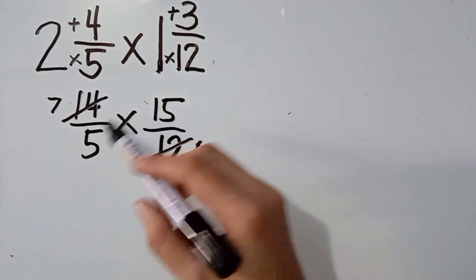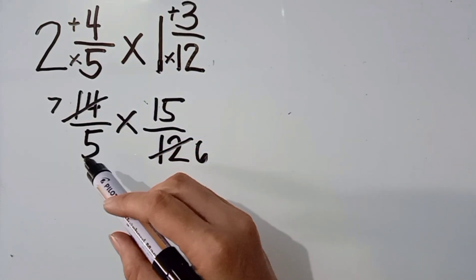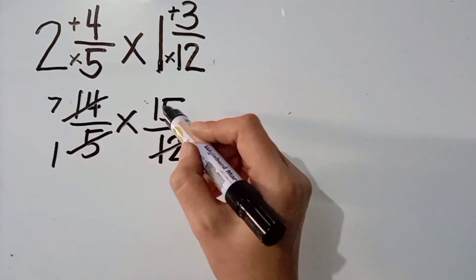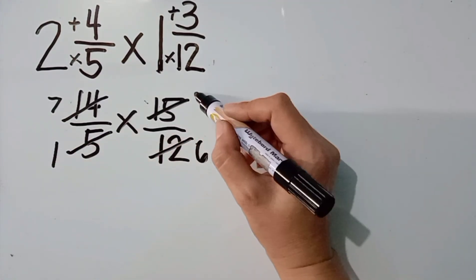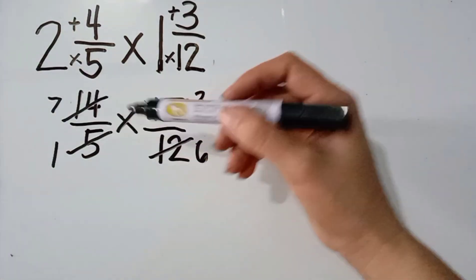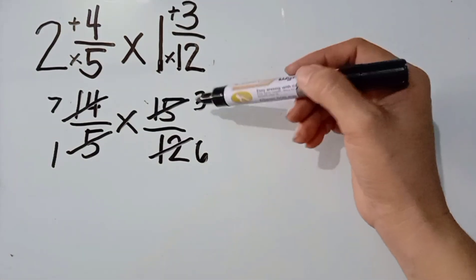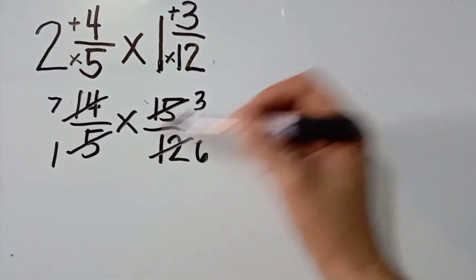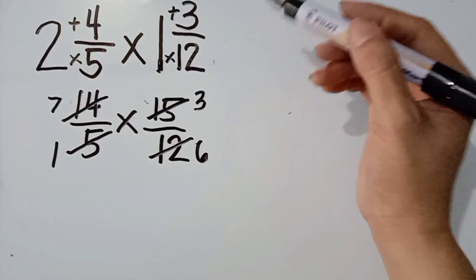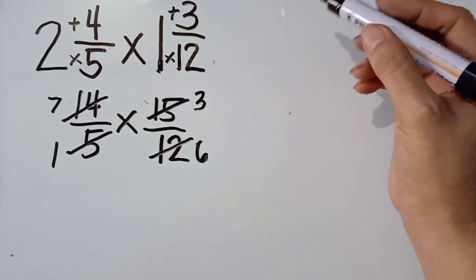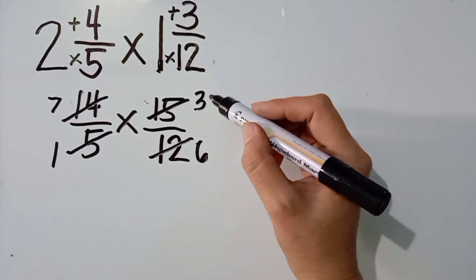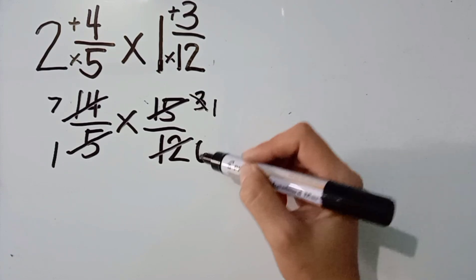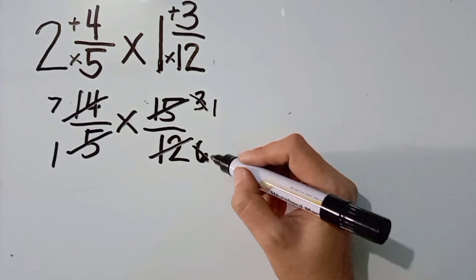Next. 15 at saka 5 po may common factor sila na 5. So, let us divide. 5 divided by 5, the answer is 1. 15 divided by 5, the answer is 3. Okay. Tingnan naman natin sila vertically kung meron pang common factor. 3 at 6 po may common factor pa? Yes po. Ano po ang common factor nila? 3. So, cancel natin sila or divide sa kanilang common factor na 3. 3 divided by 3, the answer is 1. 6 divided by 3, the answer is 2.